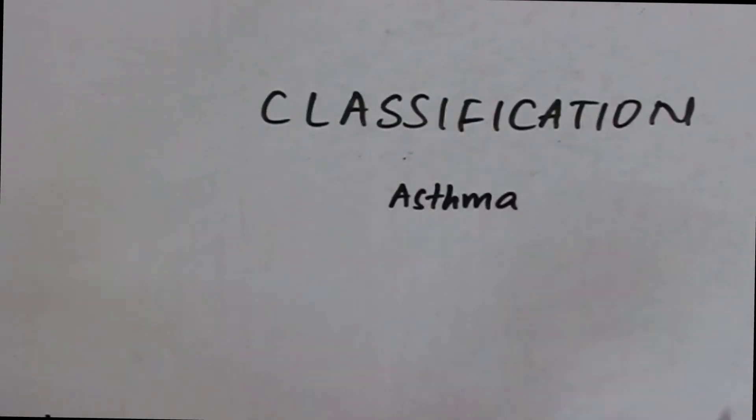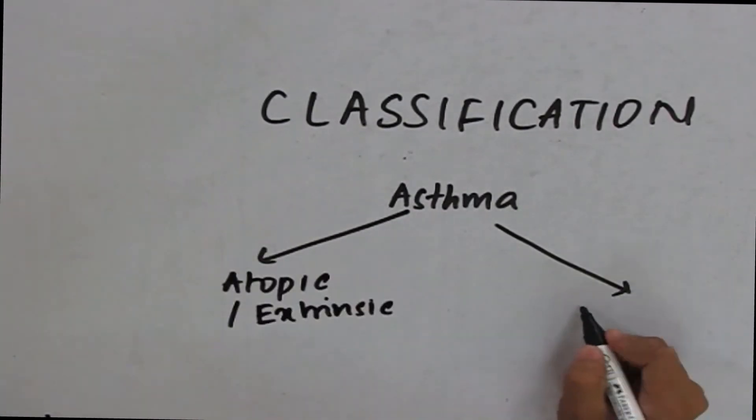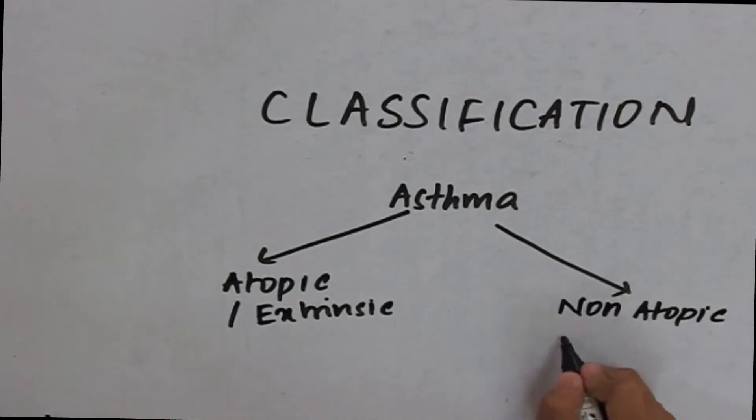Asthma is classified into two types: atopic or extrinsic, and non-atopic or intrinsic. So, now let us distinguish between atopic and non-atopic type of asthma.